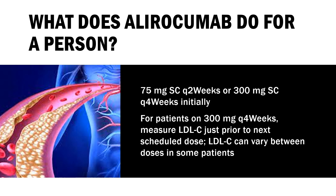Homozygous familial hypercholesterolemia (HoFH): indicated as an adjunct to other LDL-C-lowering therapies in adults with HoFH to reduce LDL-C. For established CV disease or primary hyperlipidemia including HeFH: 75 mg SC Q2 weeks or 300 mg SC Q4 weeks initially. For patients on 300 mg Q4 weeks, measure LDL-C just prior to next scheduled dose, as LDL-C can vary between doses. If LDL-C response is inadequate, may adjust to 150 mg SC Q2 weeks. Patients with HeFH undergoing apheresis or with HoFH: 150 mg SC Q2 weeks, may be administered without regard to timing of apheresis.